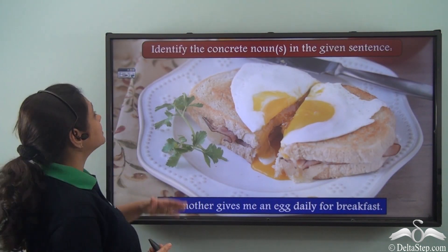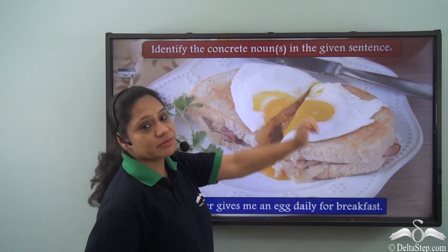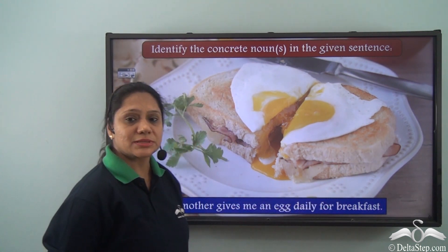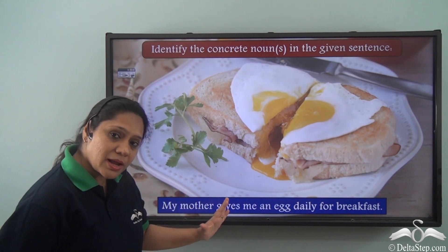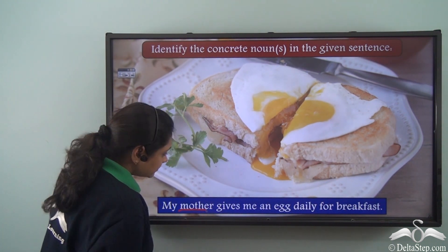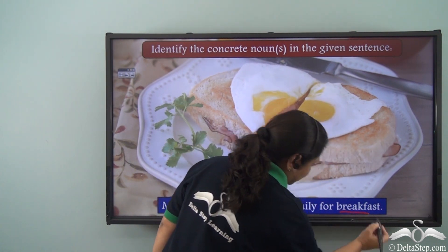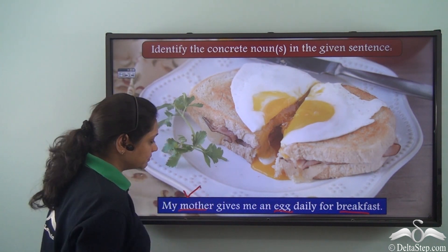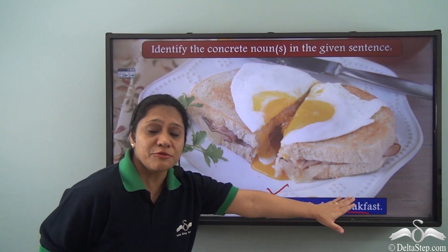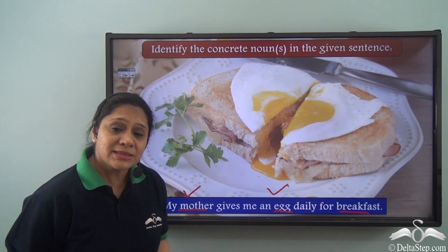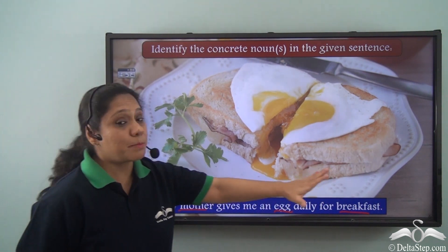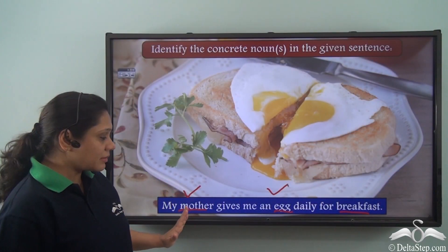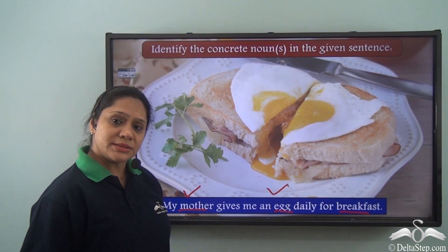Now let us do this exercise. Identify the concrete nouns in the given sentence: 'My mother gives me an egg daily for breakfast.' The nouns in this sentence are: mother, egg, breakfast. The concrete nouns are mother and egg. Breakfast is not a concrete noun — the things we have for breakfast are concrete, but breakfast itself does not refer to anything concrete. So only mother and egg are concrete nouns in this sentence.